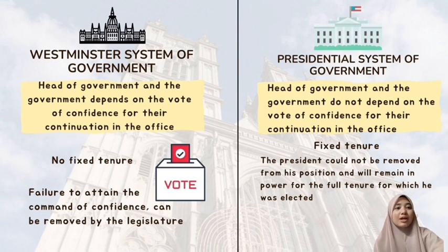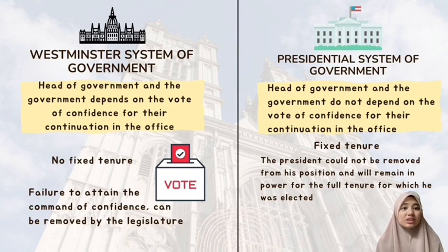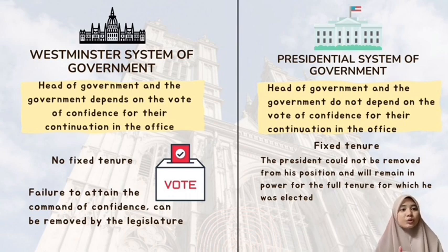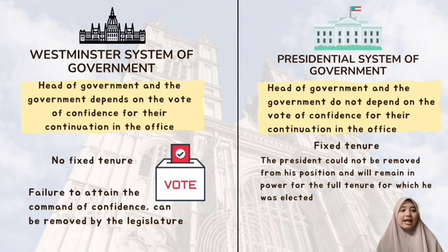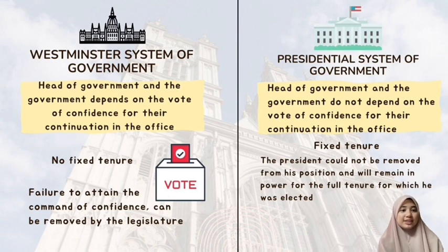On the other hand, the presidential system allows the president to have a fixed term of office. The president has no authority to remove members of the legislature. The removal of either the legislative members or the president can only take place from a vote by the lower legislative chamber and other particular conditions. In a normal situation whereby the political party represented by the president is a minority in the legislature, the president could not be removed from his position and will remain in power for the full tenure for which he was elected. For instance, in the United States, the president's term of office is fixed for four years. Unlike the parliamentary system where the prime minister can be removed if he loses the command of confidence, there is no vote of confidence that can remove the president's position in the presidential system, even if the president is impeached for misconduct.